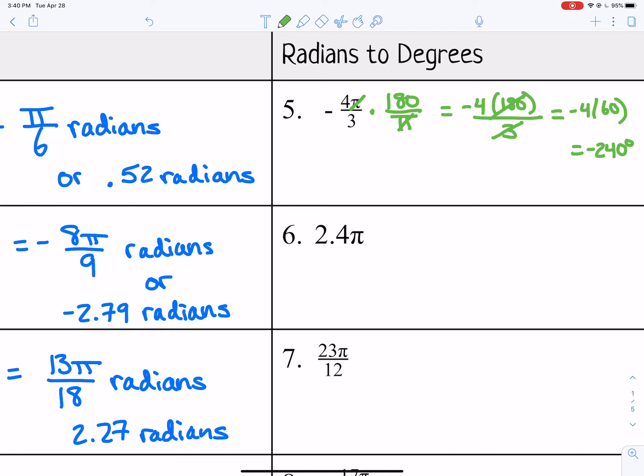If I have 2.4 pi and I want to convert, again you want to get rid of the pi, so put pi in the denominator. Multiply by 180 divided by pi. The pi would cancel out, and then you just need to multiply 2.4 times 180, and that gives you 432 degrees.